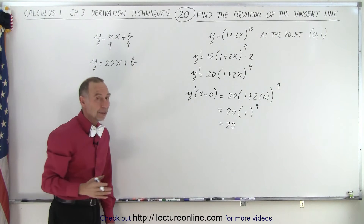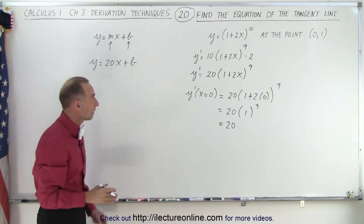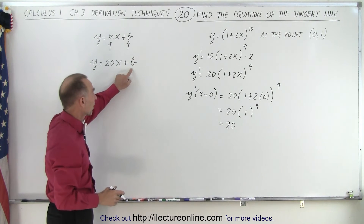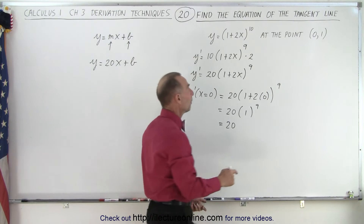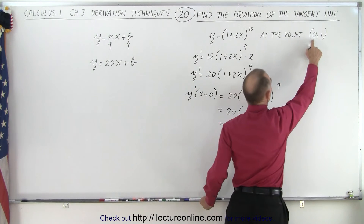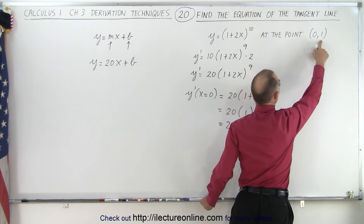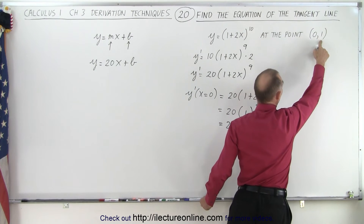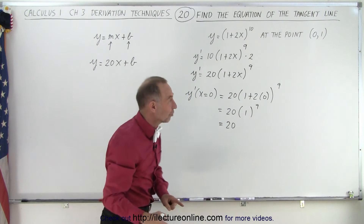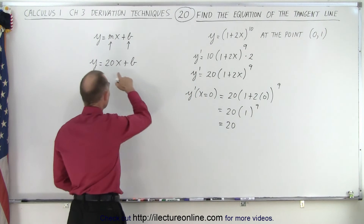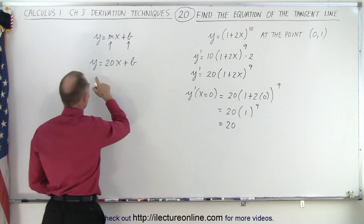The next step, we need to find the y-intercept b. We're given the point (0, 1), which means when x equals 0, y equals 1, and we can plug those values into our equation.